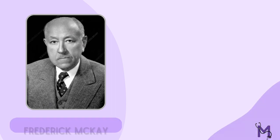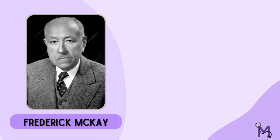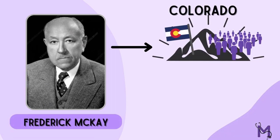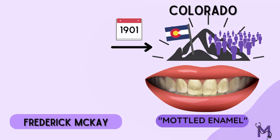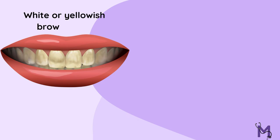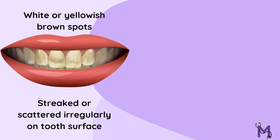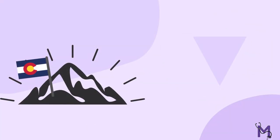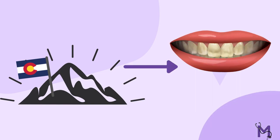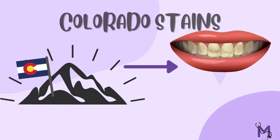Frederick McKay, a dentist, visited Colorado Springs in the USA in 1901. There, he noticed almost every patient had permanent stains on their teeth, which he called mottled enamel. They were white or yellowish-brown spots streaked or scattered irregularly on the tooth surface, appearing like the dead paper-white color of a china dish. Due to the area these stains were found in, they came to be known as the Colorado stains.